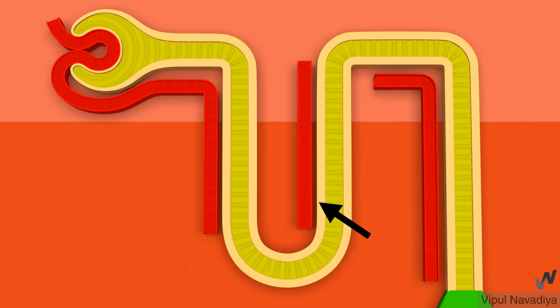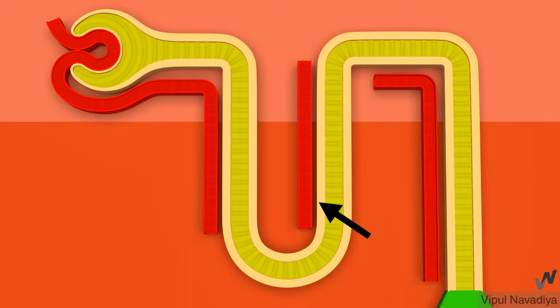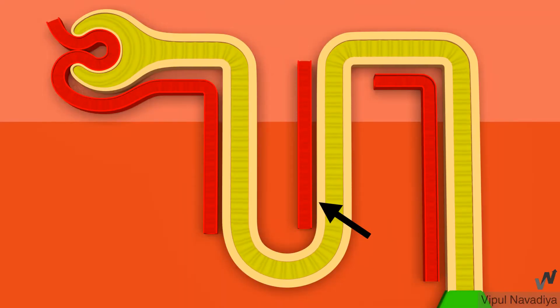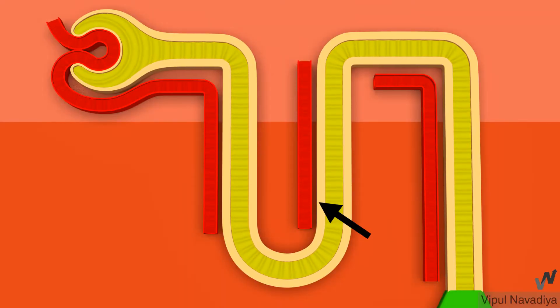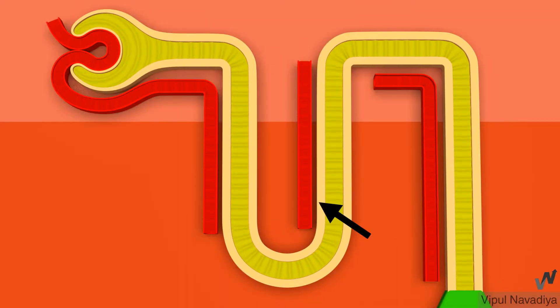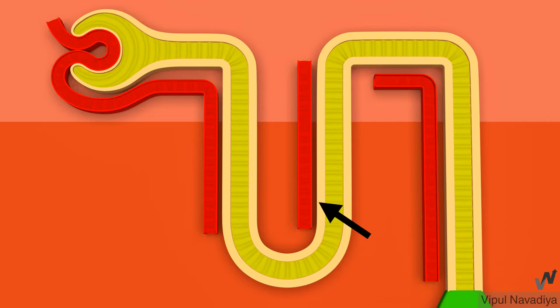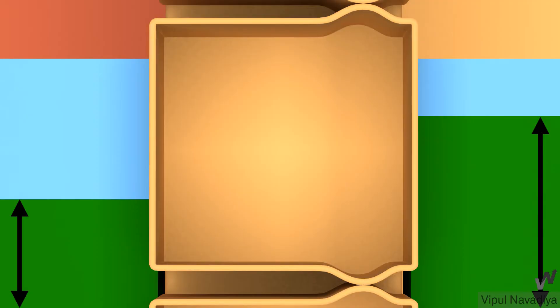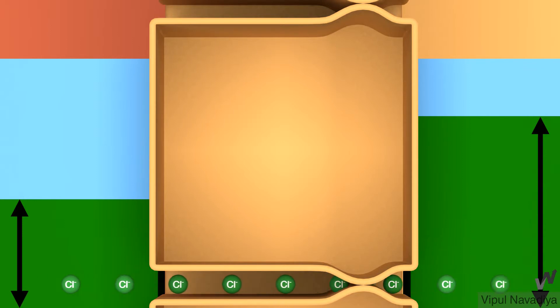Now, the thin ascending limb. Here, chloride reabsorption occurs passively by the paracellular route. The luminal concentration of chloride is higher than the interstitial concentration, so chloride moves down this concentration gradient.